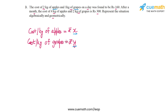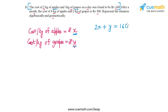The information given in the problem will help us make a pair of linear equations in x and y. The first piece of information is that the total cost of 2 kg of apples and 1 kg of grapes is 160 rupees. So 2 kg of apples costs 2x rupees, and 1 kg of grapes costs y rupees, giving us our first equation: 2x + y = 160.